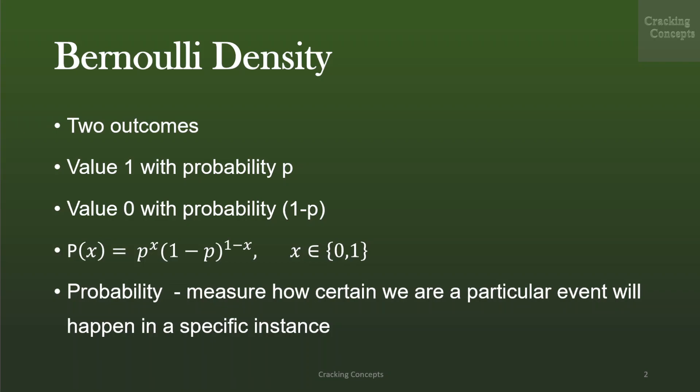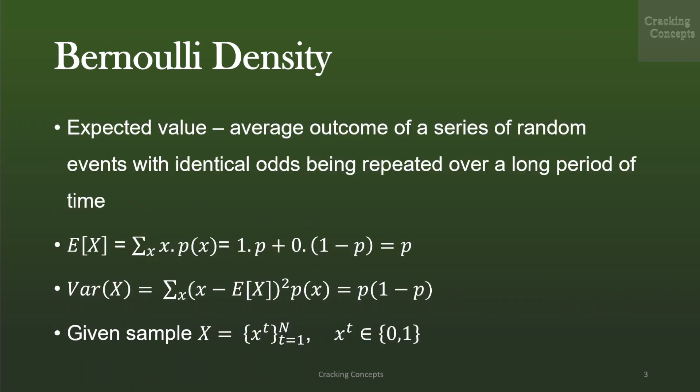Probability is the measure of how certain we are of a particular event occurring in a specific instance, whereas expected value is the average outcome of a series of random events with identical odds being repeated over a long period of time. The expected value and variance can be calculated as: expectation of x given by sigma_x of x into p of x. Substituting the values of x and p(x), we get the value p. Variance of x is given by sigma_x of (x minus expectation of x) squared into p(x), and on substituting the values we get p into 1-p.